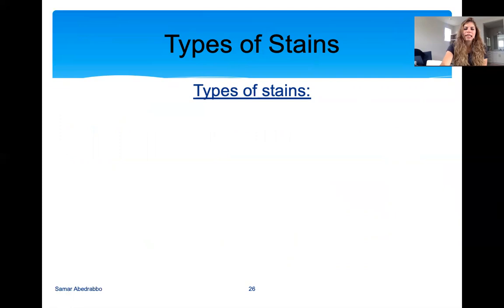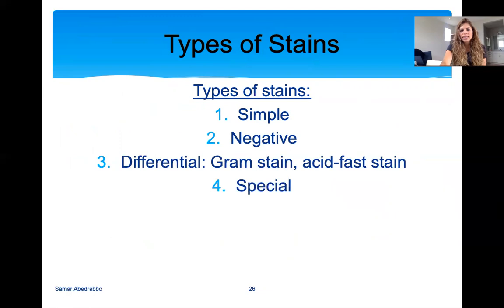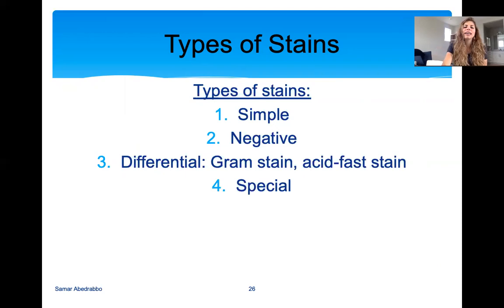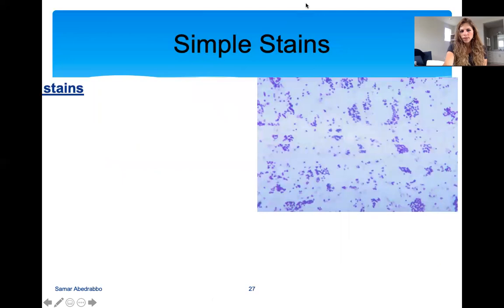The types of stains to know after you've created a smear and heat fixed it are: simple stains, negative stains, differential stains, and special stains. A simple stain is exactly what the name says — nothing fancy. A negative stain stains the background. Differential stains differentiate one structure, giving you either a negative or positive result. Special stains are everything else that doesn't fall into those three groups.